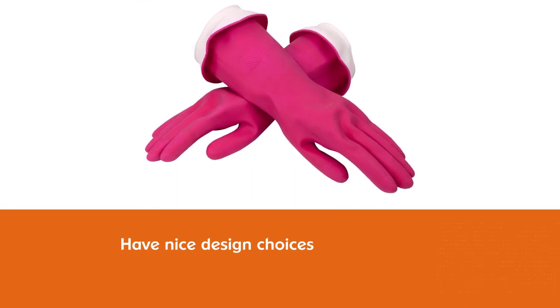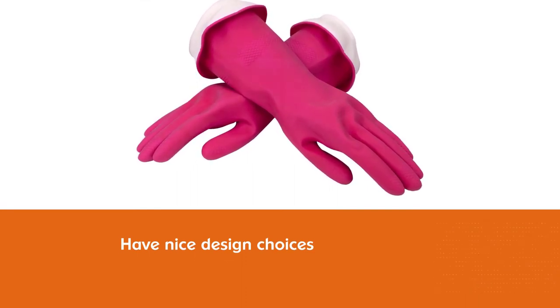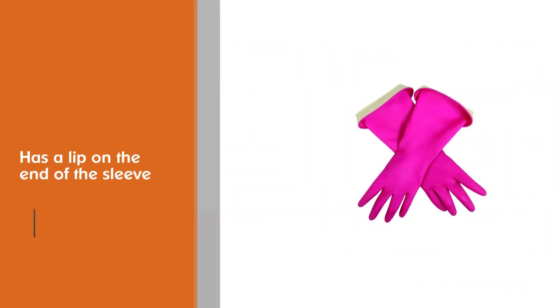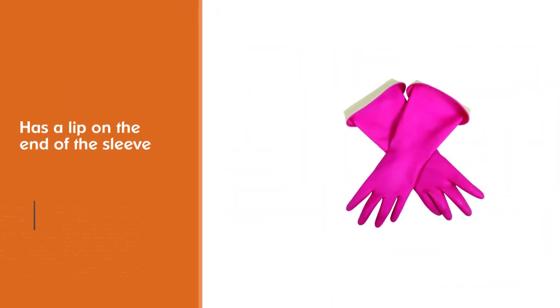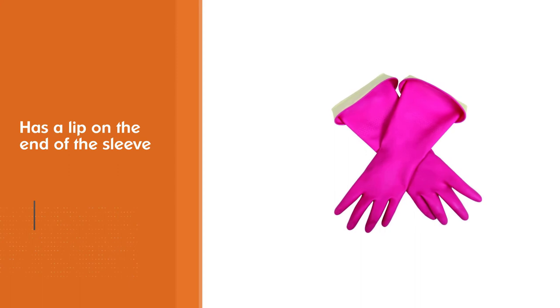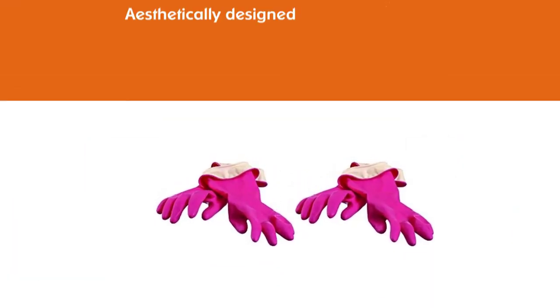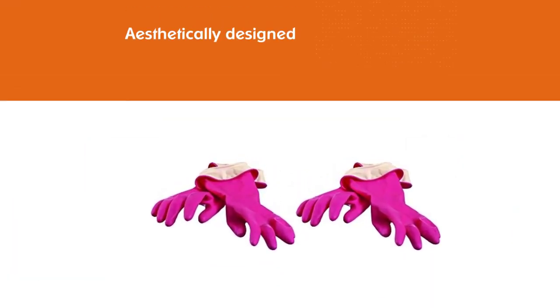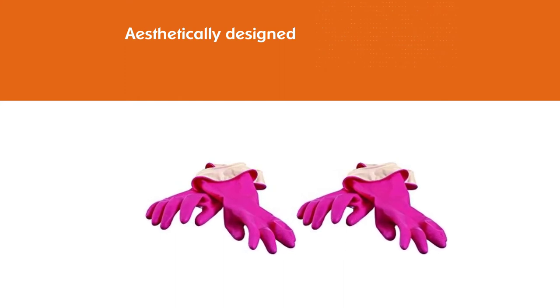The double cuff gives length options and even when not folded down has a lip on the end of the sleeve to help with water drippage. The gloves are aesthetically designed with fitted wrists and fingers allowing them to fit snugly and avoid gaping or adjusting issues. The material is substantially thick but stretches nicely, allowing them to remain comfortable.